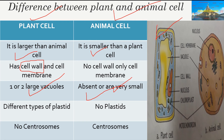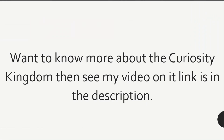Plants have different types of plastids including chloroplasts, but animals have no chloroplasts or plastids at all. Plant cells also lack centrosomes, whereas animal cells have centrosomes, which regulate cell division.